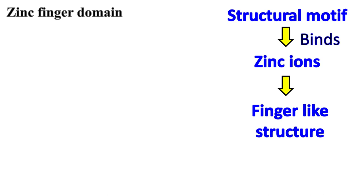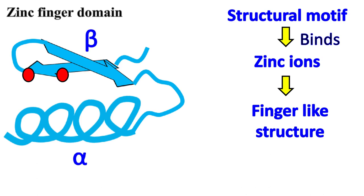The proteins that form zinc finger domain have two antiparallel beta sheets followed by the presence of an alpha helix. The zinc ions are present between the amino acid residues of the beta sheet and the alpha helix.